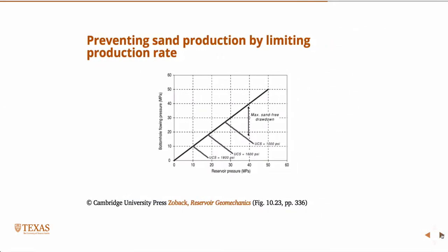While we're talking about sand production, this is a generic plot on the effect of drawdown for different unconfined compressive strength values on sand production.